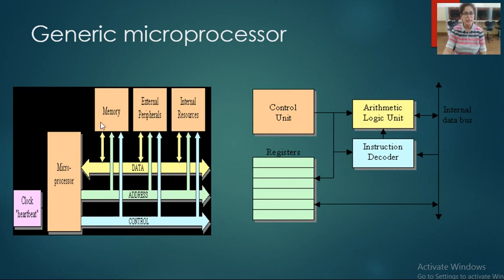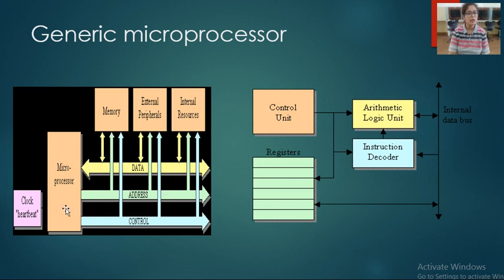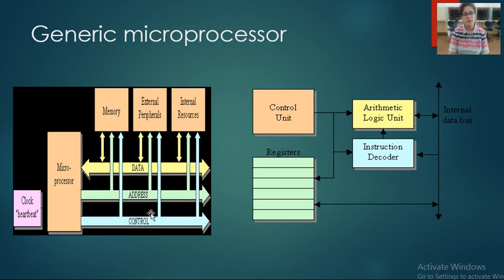This is the second diagram of a general microprocessor. Here this is the microprocessor — that is CPU or MPU. Then clock, which is used to provide clock pulse. Memory, which contains RAM and ROM. External peripherals — that is input/output devices. And these are the buses: data bus, address bus and control bus. Data bus is used to transfer data, address bus is used to transfer addresses, and control bus is used to transfer control signals.